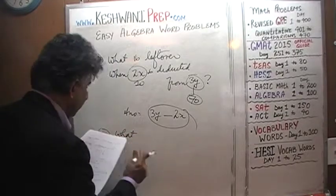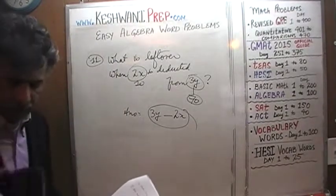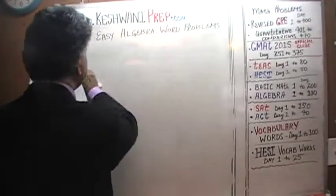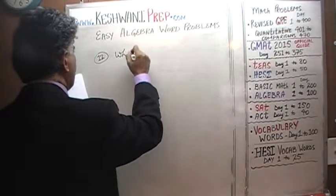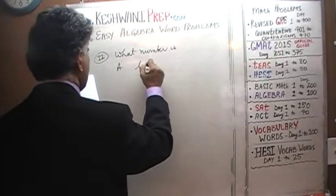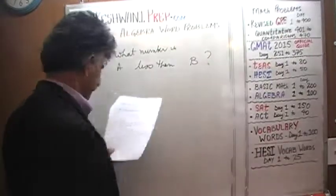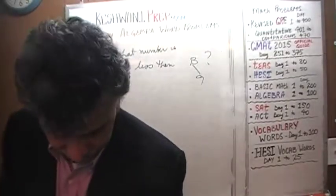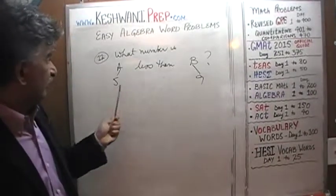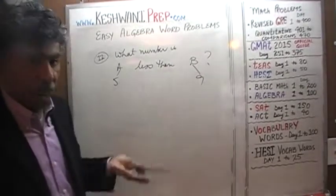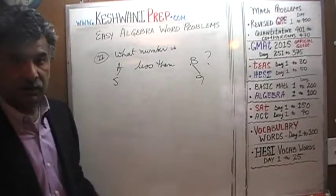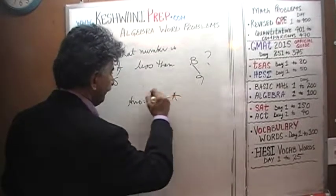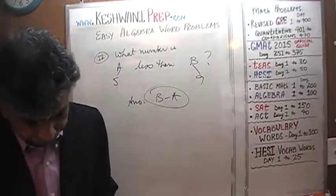Let's do the next one, number 12. What number is a less than b? Make up a number: what number is 5 less than 9? The answer of course is 4 — 4 is 5 less than 9. How do we find 4? By doing 9 minus 5 — subtracting 5 from 9. That's exactly what we do here: the answer to this algebra word problem is simply B minus A.